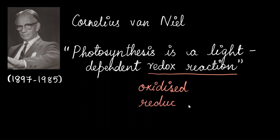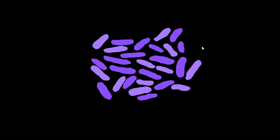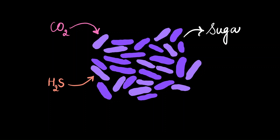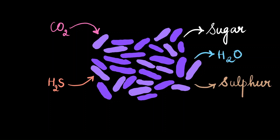Van Neel did not work directly on green plants; he worked on purple and green sulfur bacteria, back in 1931. These organisms also undergo photosynthesis in the presence of sunlight, but instead of water, they use hydrogen sulfide — the extremely dangerous gas with a rotten egg smell. At the end of the process, they release sugar, water, and sulfur or sulfate depending upon the organism. They do not release oxygen. In this process, the sulfur or sulfate is the oxidation product.